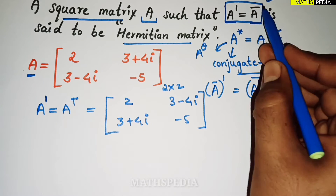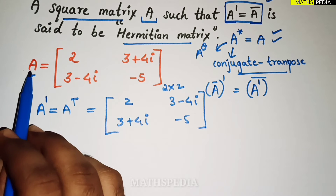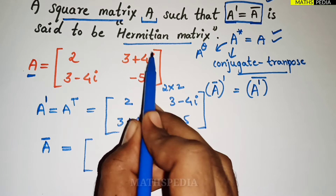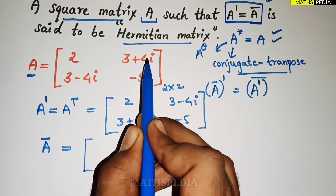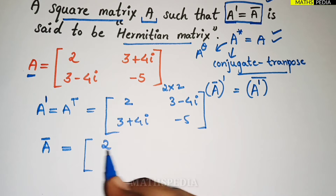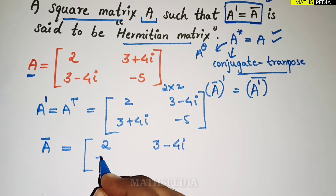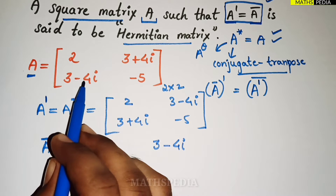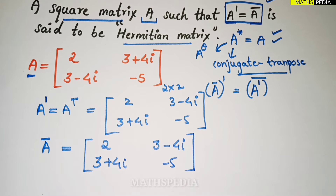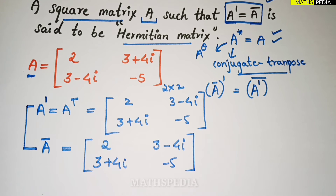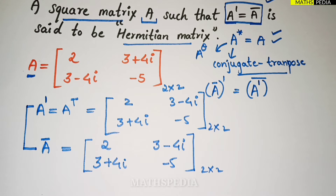Next we find A conjugate. The conjugate is obtained by changing only the sign of the imaginary part. The real part 2 remains the same, 3 stays the same, −4i becomes +4i, giving 3+4i, and −5 remains as it is since it is a real number. Comparing A transpose and A conjugate, we can observe that both matrices are the same — each element matches — so the condition A transpose equals A conjugate is satisfied, confirming this is a Hermitian matrix.